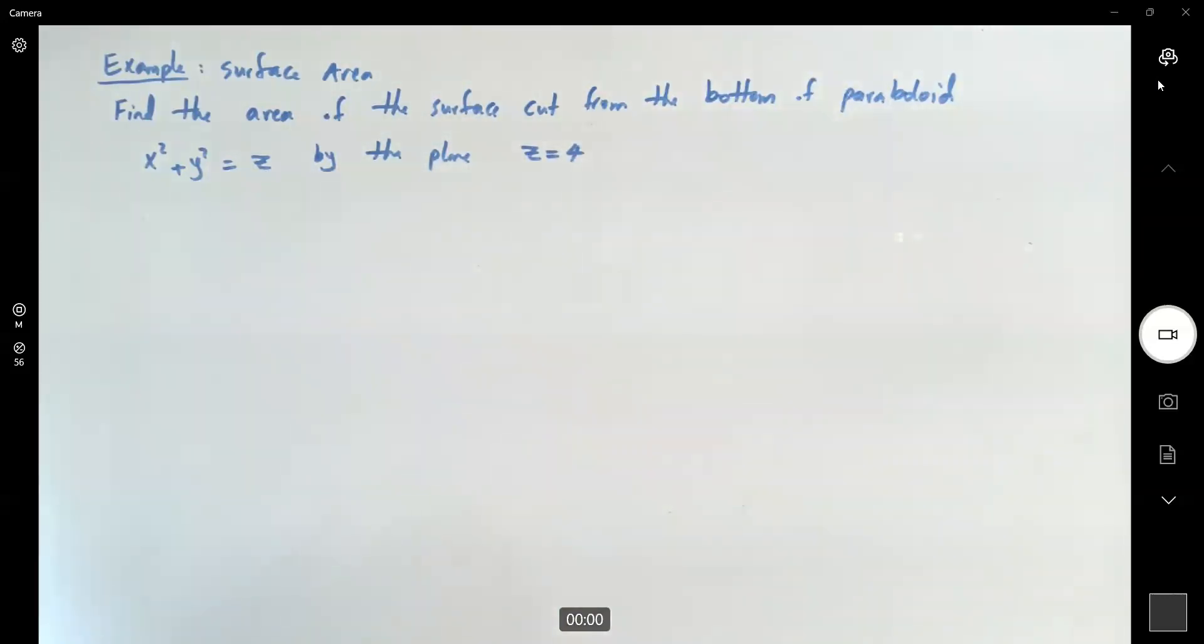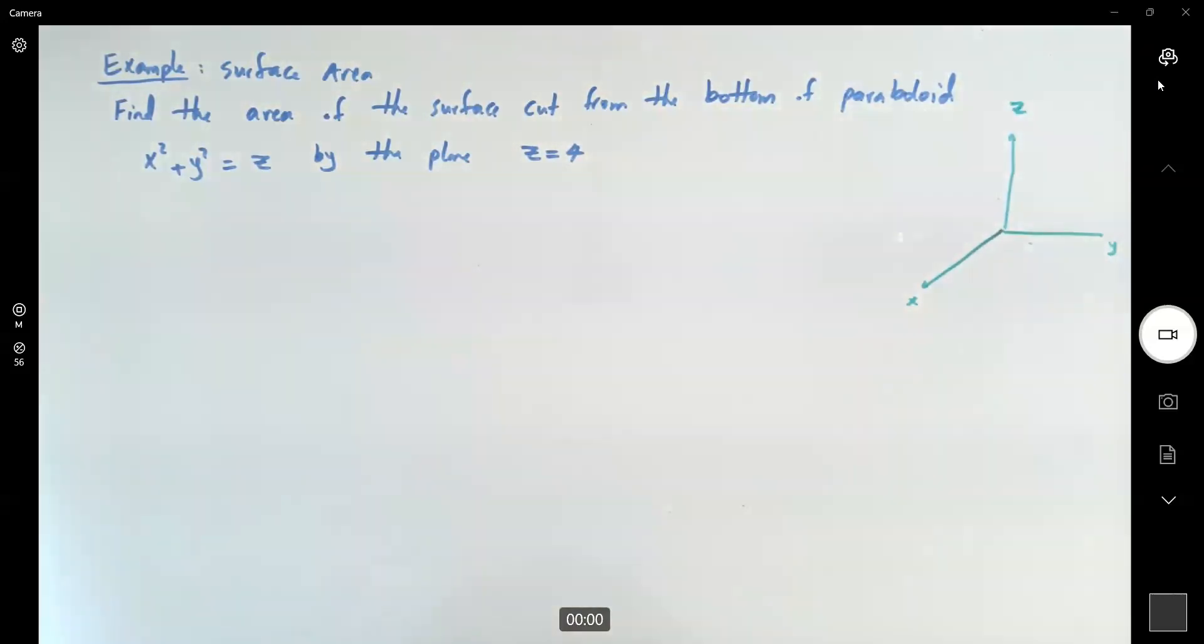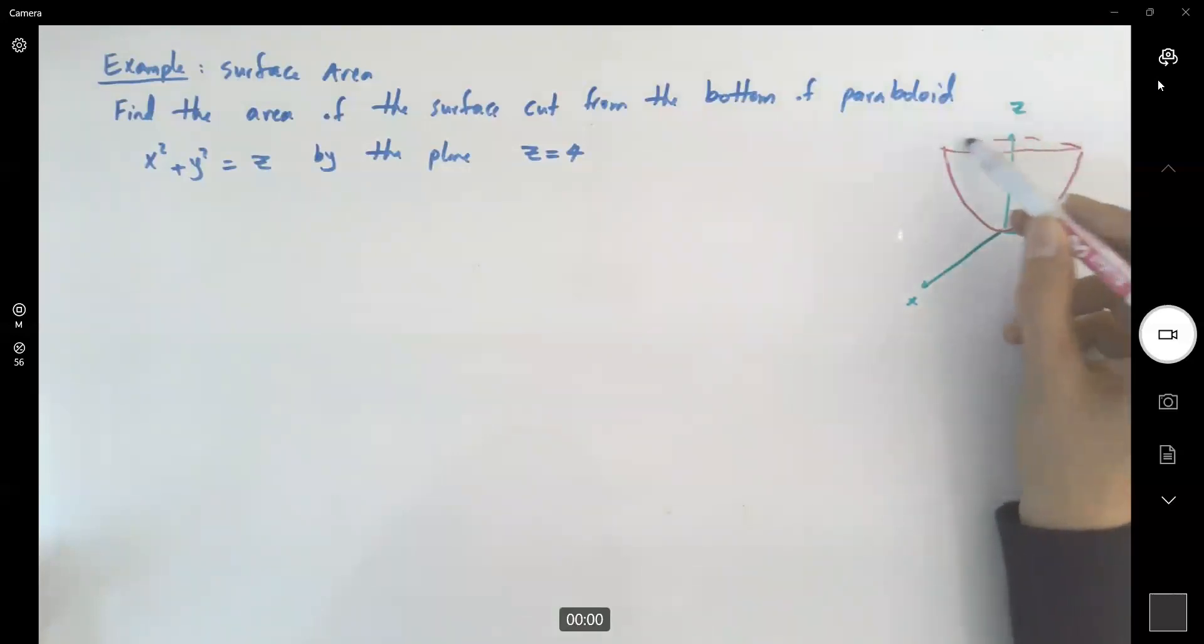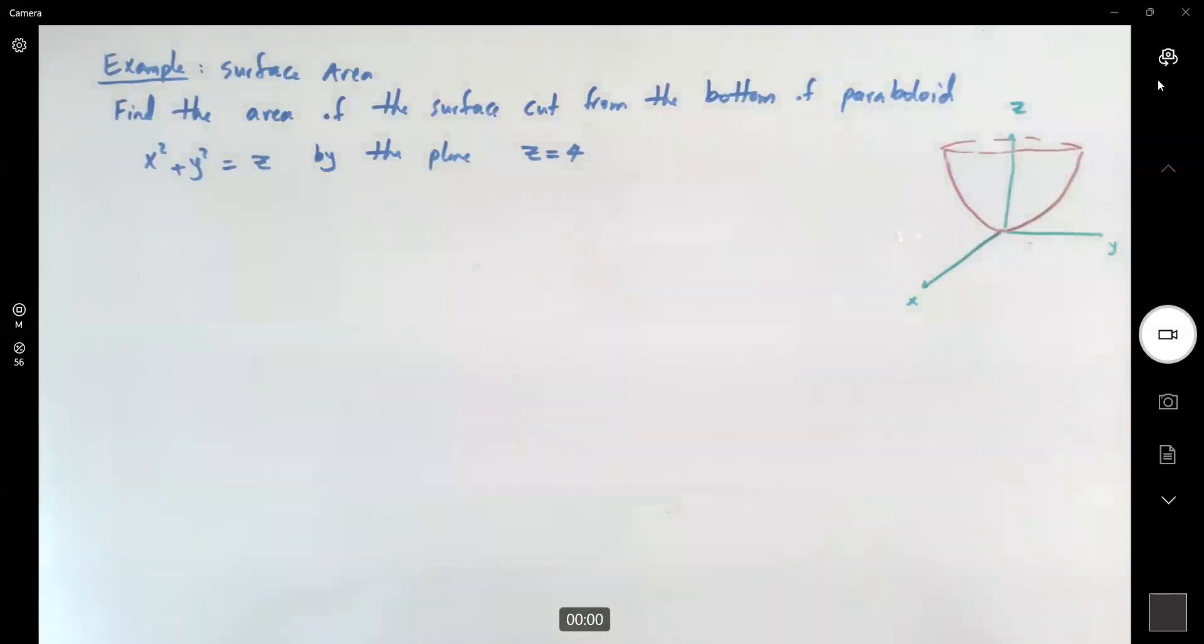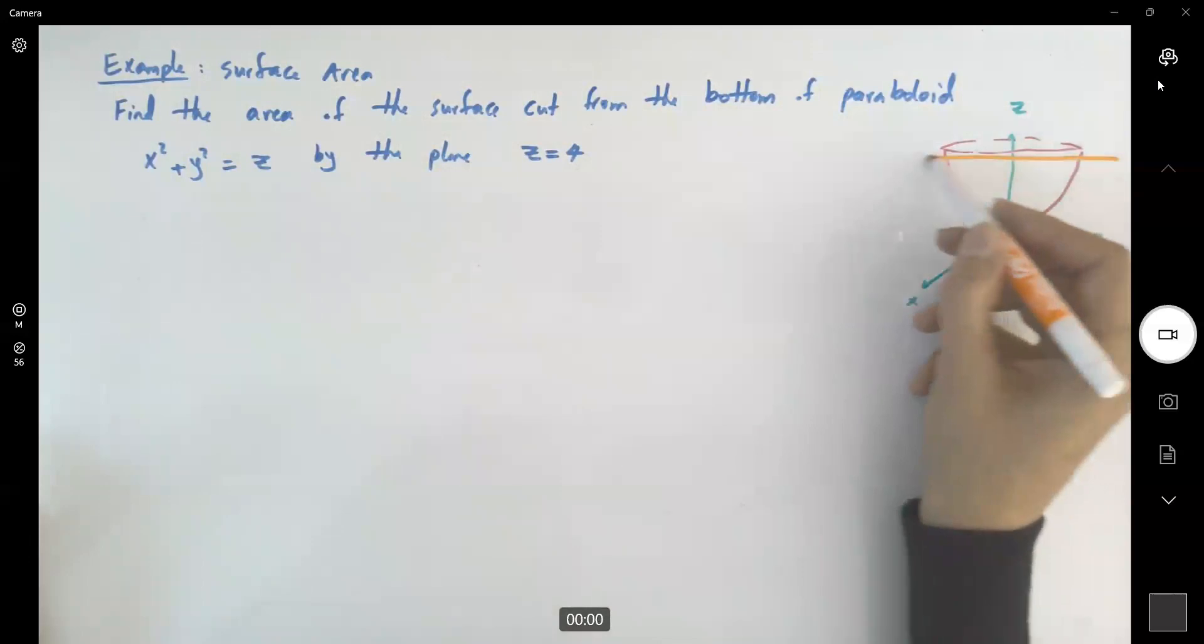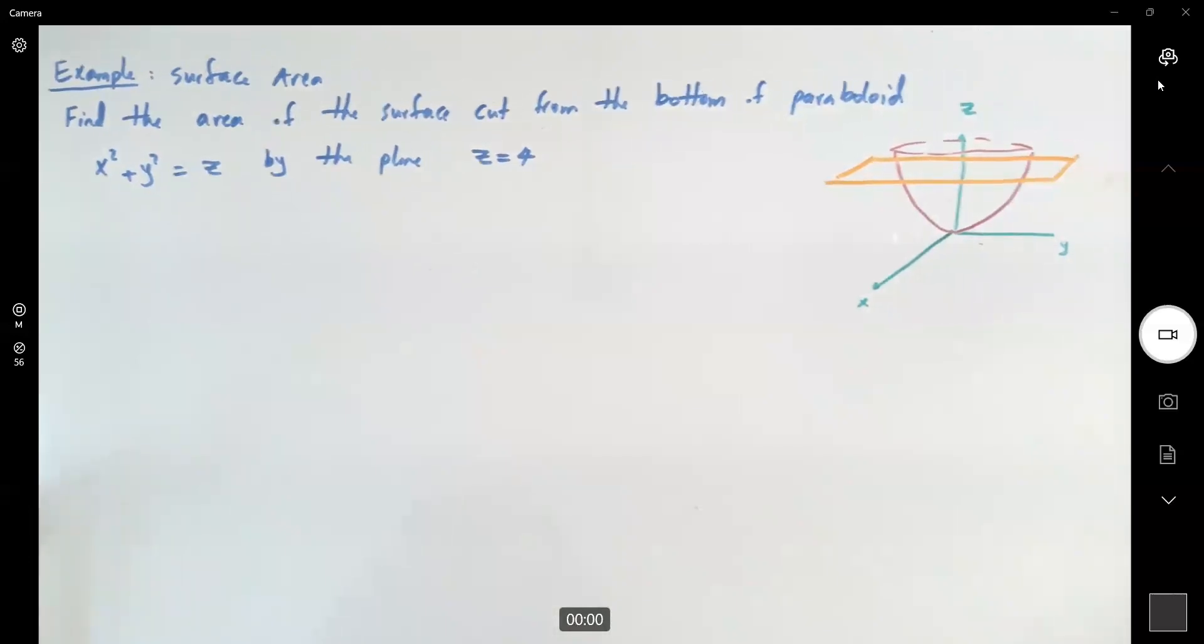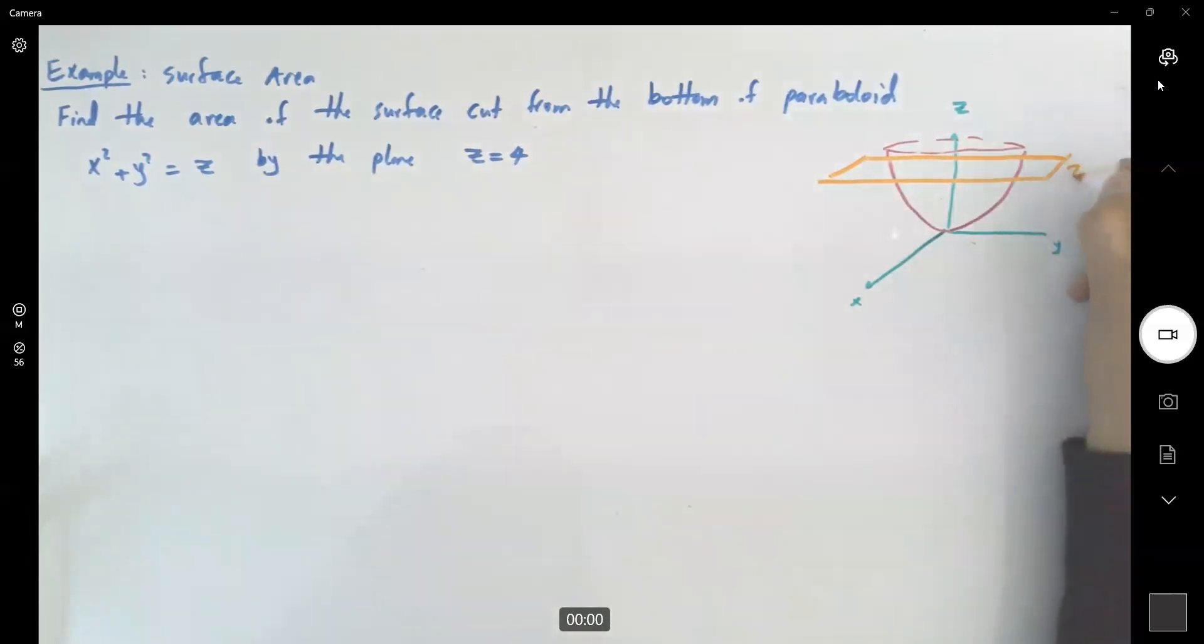So let's take a look at the graph. What does the graph look like? We have a paraboloid and we have a plane. The paraboloid opens upward and continues, and then we have a plane z equals 4 that cuts this paraboloid. So this is z equals 4.